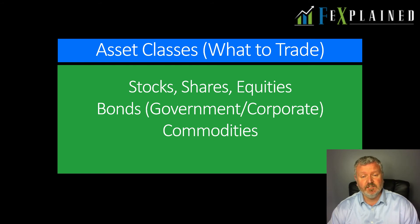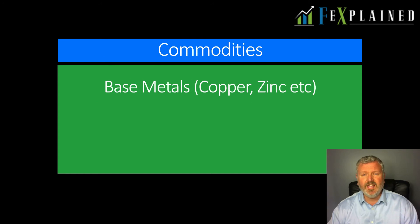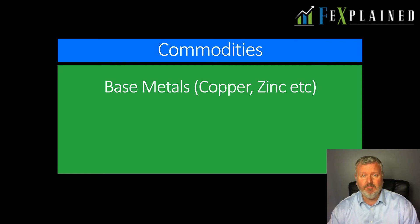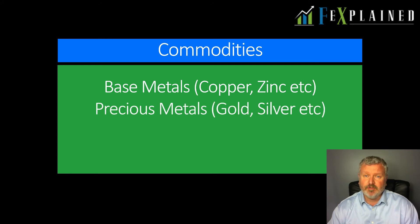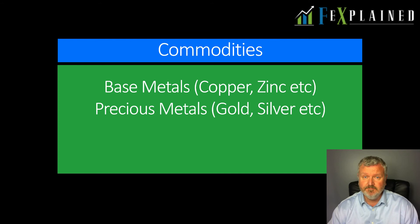Alongside stocks, shares, and government bonds, we also have commodity markets. What are commodities? Well, they are real things that we actually use in the economy to produce goods. These would include base metals — copper, aluminium, lead, zinc, nickel — and they would also include precious metals, including gold, silver, and platinum.